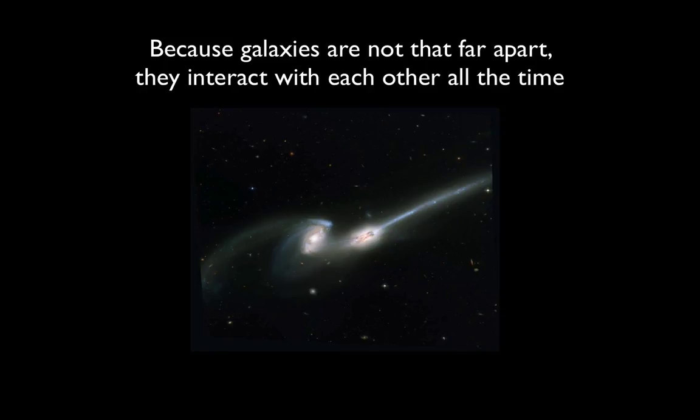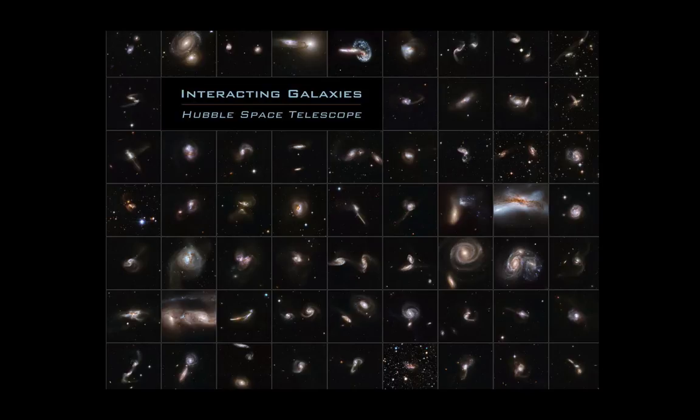Because galaxies are really not that far apart relatively speaking, they actually interact with each other all the time. And when they do, we get these beautiful pictures — these are real galaxies observed with a telescope, flying by each other. You can see that the interaction between them has caused some very dramatic things to happen. This is a gallery of interacting galaxies captured by the Hubble Space Telescope, each picture showing a different pair at one stage of an interaction.